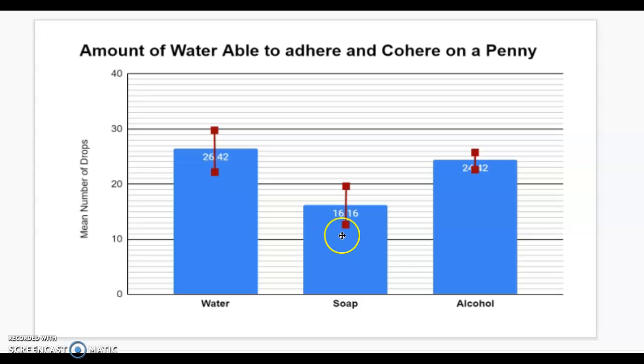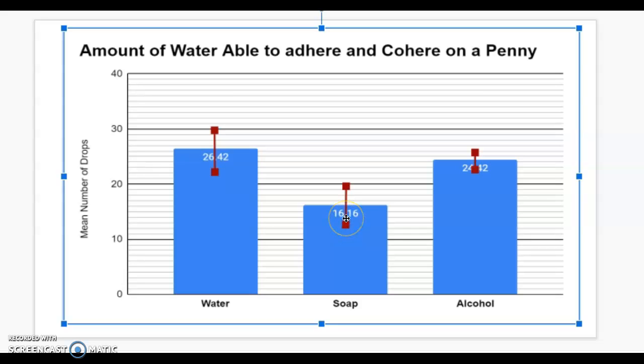So if you look at the error bars, it's a little closer here for water and soap. We see that the error bars for water and soap, and it looks like it's gotten shifted a little bit here. It doesn't matter.